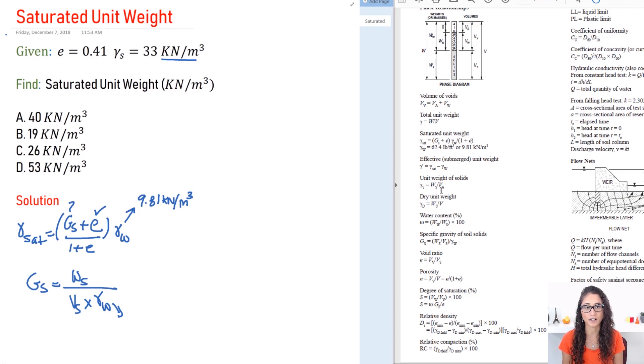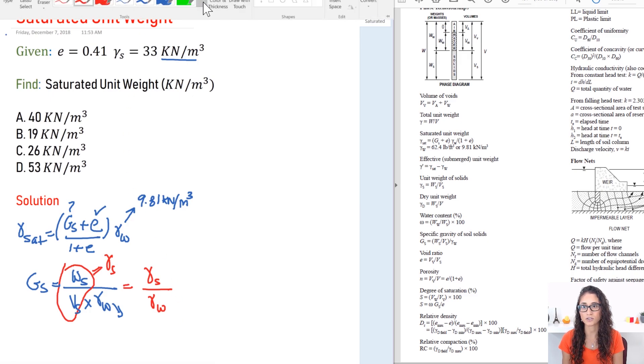So we can easily replace this term. Let me do it in a different color. So this term right here we can replace that with the unit weight of the solid. So we can rewrite this equation as unit weight of the solid divided by the unit weight of the water.